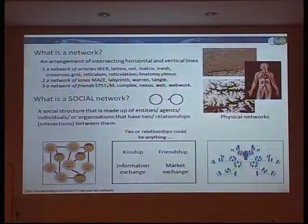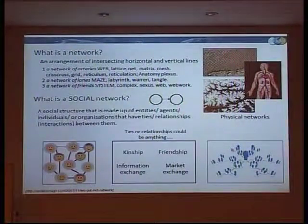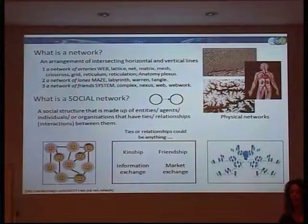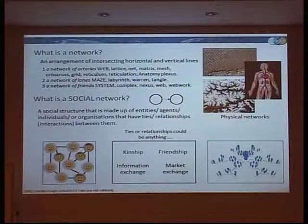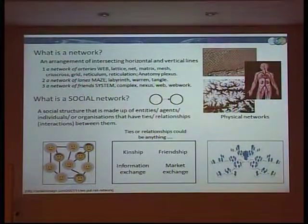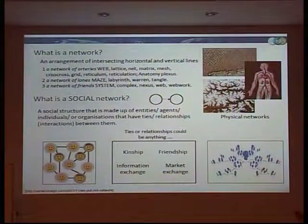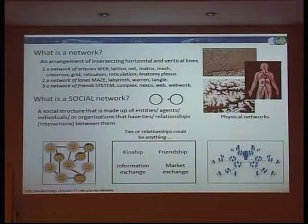As you see here, it's a web, a maze, a system. You can have a network of friends, a network of names, articles, whatever. So what's a social network? It's basically a social structure made up of people that have relationships to each other. These relationships can be friendships, kinships, or family relationships. It can be information exchange — a connection to someone because you exchange information with them — or it can be a market exchange, where I sell something to you, so I have a connection to you, from one node to another through a line.